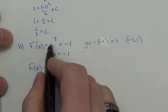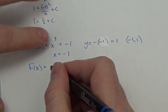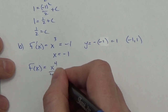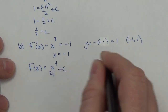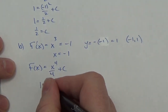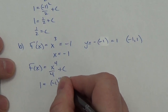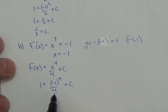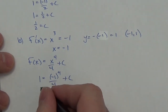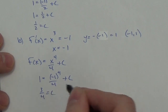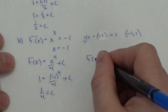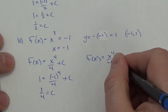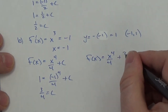I take the antiderivative of the slope function, so it's going to be x to the fourth over four plus c. I plug in my boundary condition: one equals negative one to the fourth over four plus c. That's just one quarter. Bring it over and I get c equals three quarters. Therefore, my function is x to the fourth over four plus three quarters.